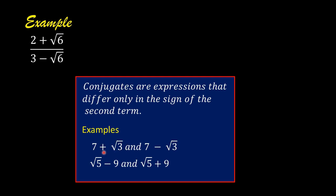The second term here is positive square root of 3, and then here it is negative square root of 3. The sign positive is changed to negative. In the second example, the sign negative is changed to positive.